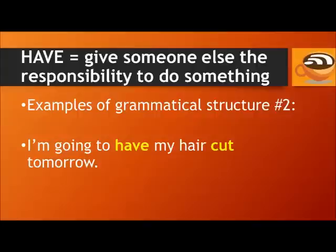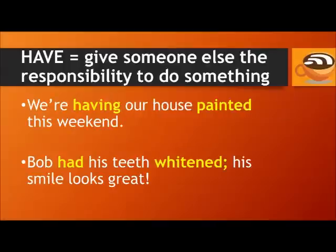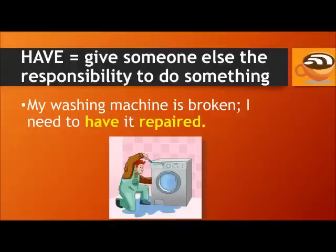Here are examples of grammatical structure two: 'I'm going to have my hair cut tomorrow.' In this structure, we don't say who cuts the hair, but the hair will be cut by somebody. 'We're having our house painted this weekend' — we don't say who does the action; we focus on the object receiving the action. 'Bob had his teeth whitened — his smile looks great.' 'My washing machine is broken; I need to have it repaired.'